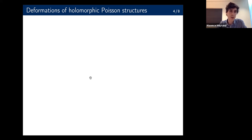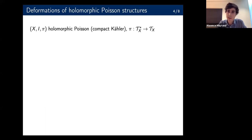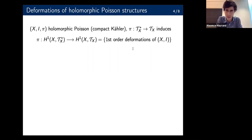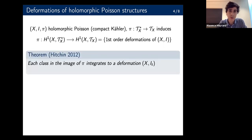I will give a slightly different point of view and introduce an unobstructedness result. Take any holomorphic Poisson manifold, which we assume is compact and Kähler. This bivector field pi can be viewed as a morphism from the cotangent bundle to the tangent bundle, and hence it induces a map on first cohomology groups. The codomain of this map is the space of Kodaira–Spencer classes — exactly the space of first-order deformations of complex structures. Hitchin observed that all those lying in the image of this map actually do integrate to a deformation of complex structures. The magic here is the integrability of the bivector field pi, which satisfies differential equations enabling us to solve the Maurer–Cartan equation.